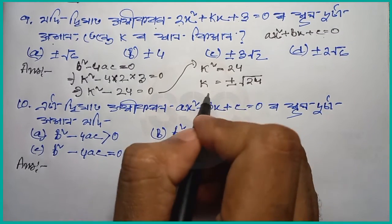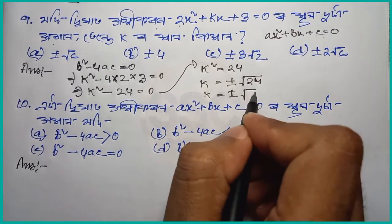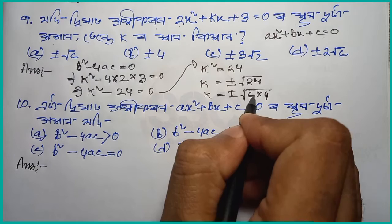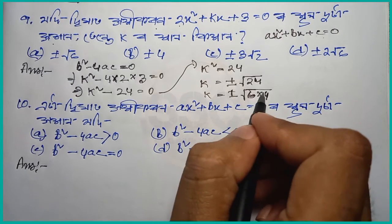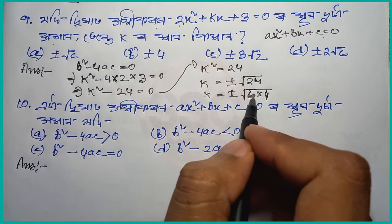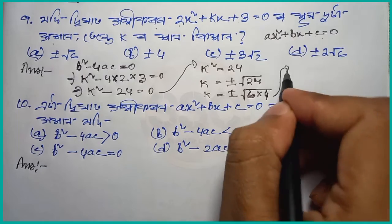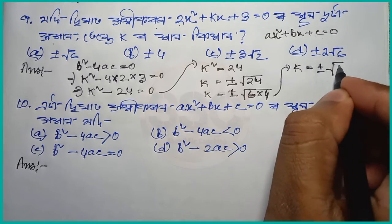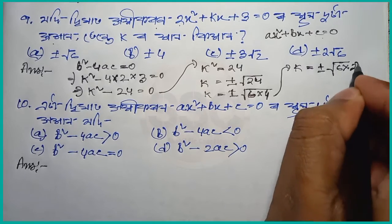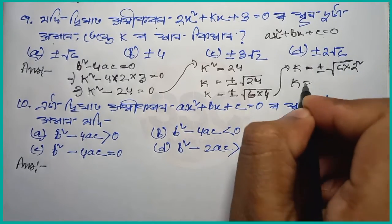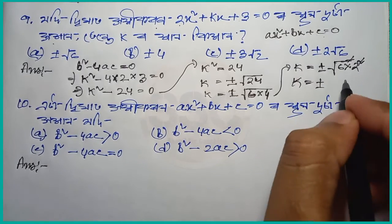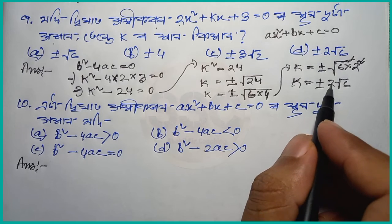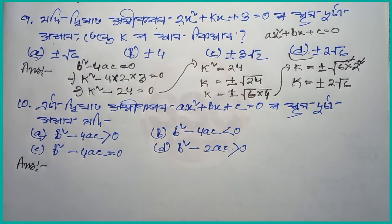So k is equal to plus or minus 24. Then 4 plus 2 is 6. So the value of k: we write root over 6 into 4, and 6 to remove the power. And 4 will still be 1 squared. So k is equal to plus or minus root over — to cancel the root, it will be 2 into the other, so k equals plus or minus 2 root 6.